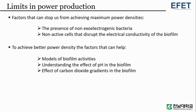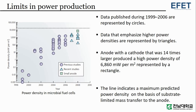Factors that can help achieve better power density include models of biofilm activities, understanding the effect of pH in the biofilm, and the effect of carbon dioxide gradients in the biofilm. In the figure, data published from 1999 to 2006 are represented by circles; data emphasizing higher power densities are represented by triangles. A special case where an anode with a cathode 14 times larger produced a high power density of 6860 milliwatts per meter squared is represented by a rectangle.